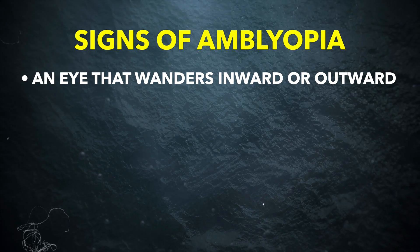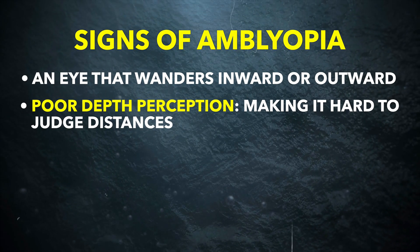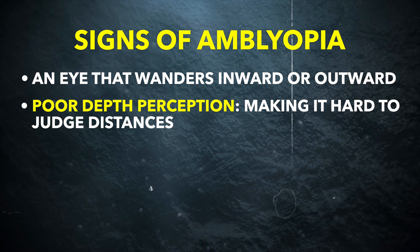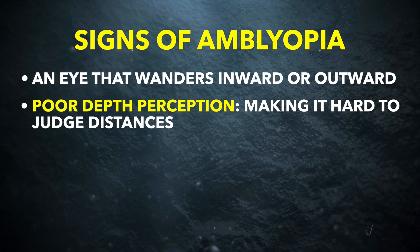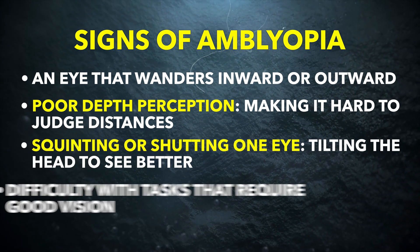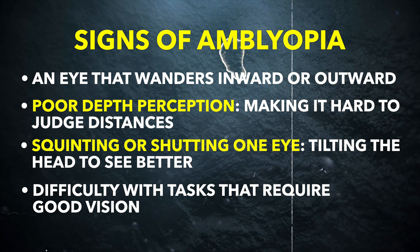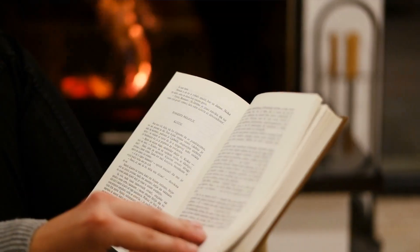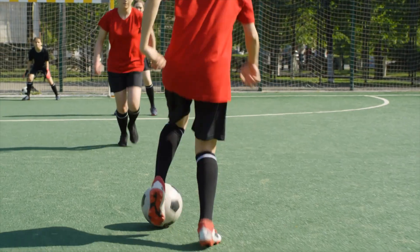The symptoms of amblyopia can be hard to notice, especially in young children. Here are some signs to watch out for: an eye that wanders inward or outward; poor depth perception, making it hard to judge distances; squinting or shutting one eye; tilting the head to see better; and difficulty with tasks that require good vision, like reading, drawing, or playing sports.